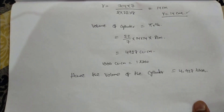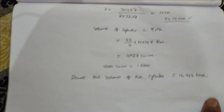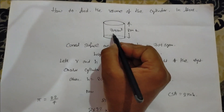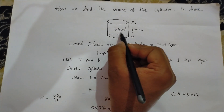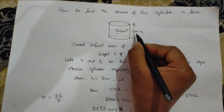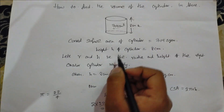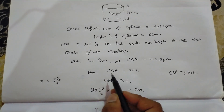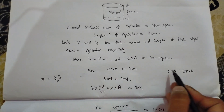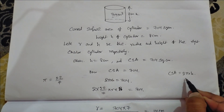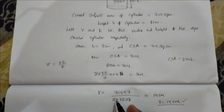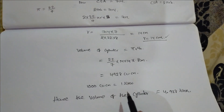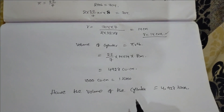This is how you find the volume of a cylinder in liters. First we took the curved surface area as 704 square centimeters and height as 8 centimeters. First we found the R value as 14 centimeters, then we found the volume of the cylinder. I hope you understand this video. Thank you so much.